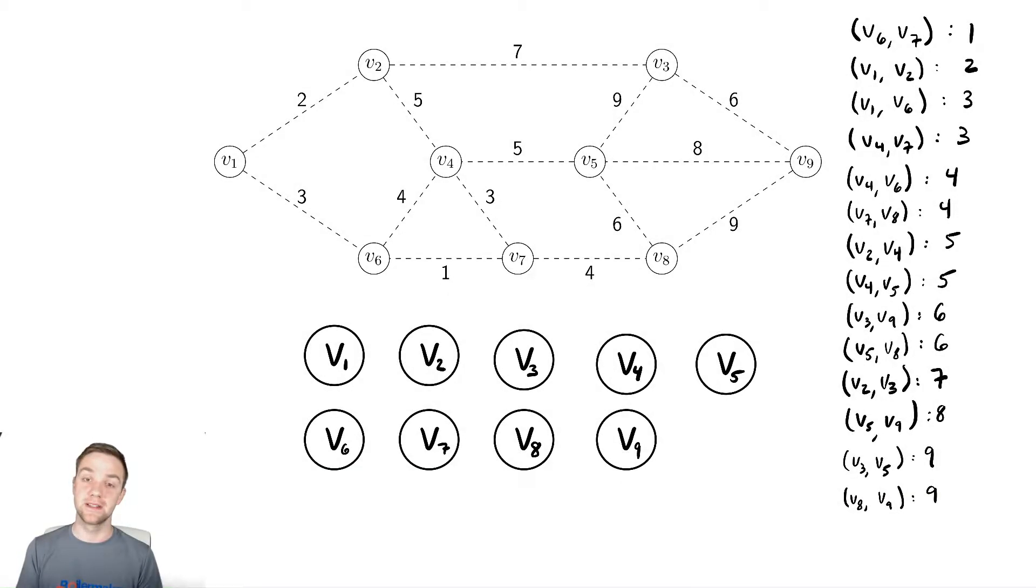In this video, we're going to discuss an alternative algorithm for finding a minimum spanning tree. The previous algorithm that we discussed was Prim's minimum spanning tree algorithm. The algorithm we'll discuss here is called Kruskal's minimum spanning tree algorithm, and it works a little bit differently.